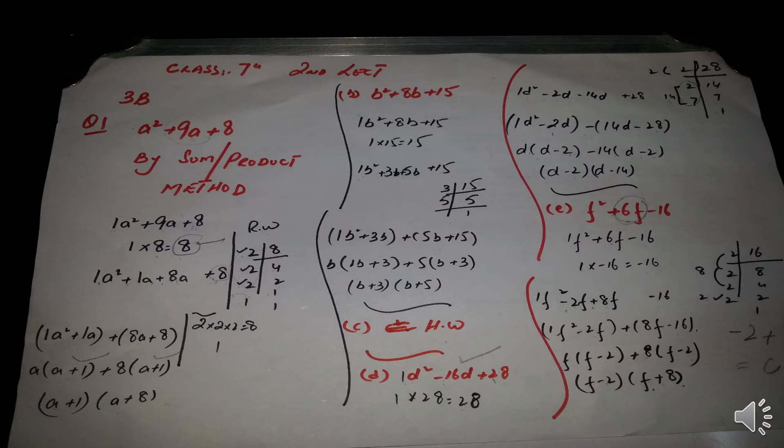Part d: d² - 16d + 28. The coefficient of the highest power multiplied by the last term gives 28. We split minus 16 into two numbers that multiply to 28 and add to minus 16. Taking the LCM of 28: 2 × 2 × 7. The pairs are 2 and 14 — minus 2 and minus 14 — both smaller than 16, same sign. Minus 2 minus 14 equals minus 16, and minus 2 × minus 14 equals 28. Taking d common from the first bracket and 14 common from the second, the factors are (d − 2)(d − 14).